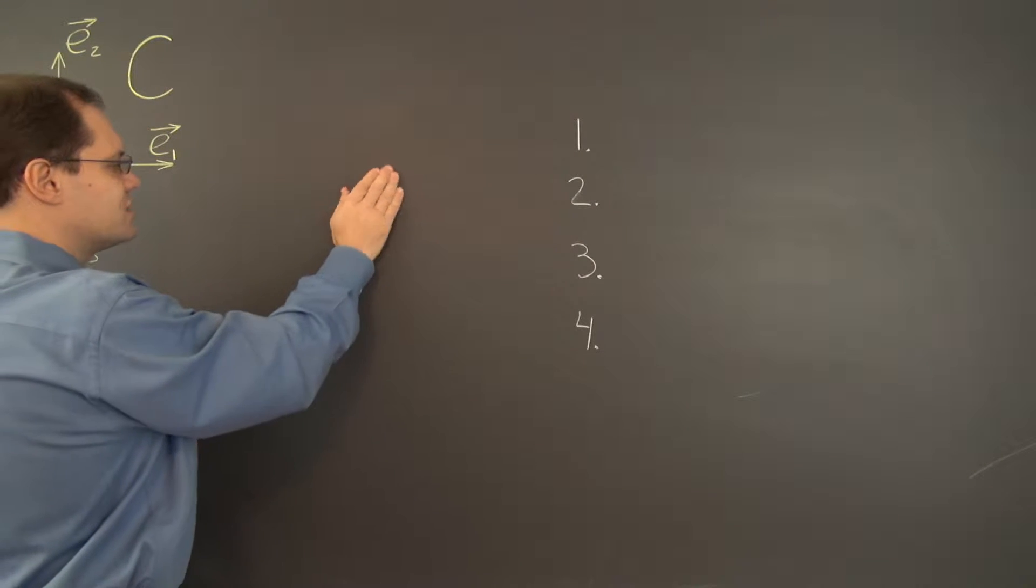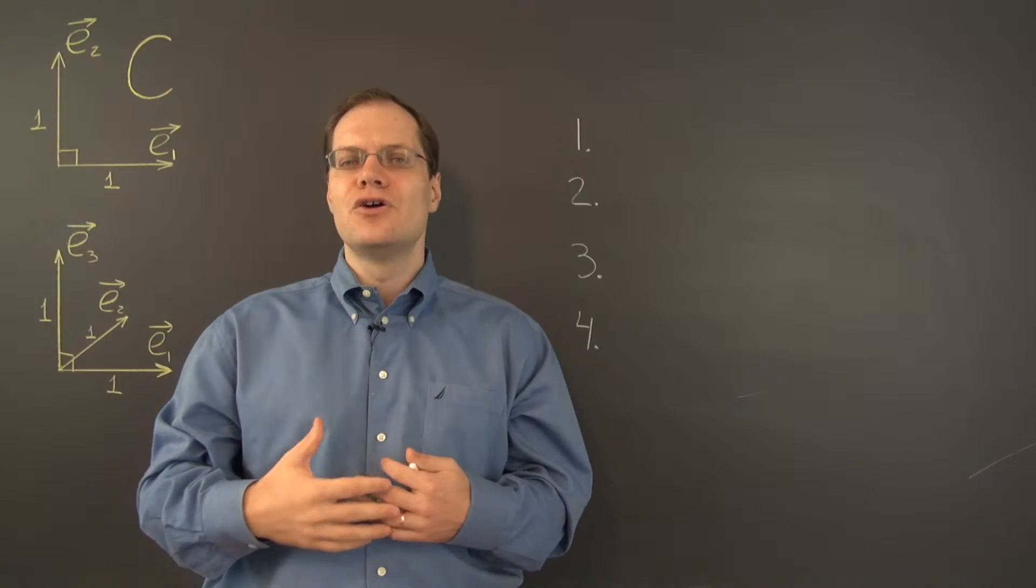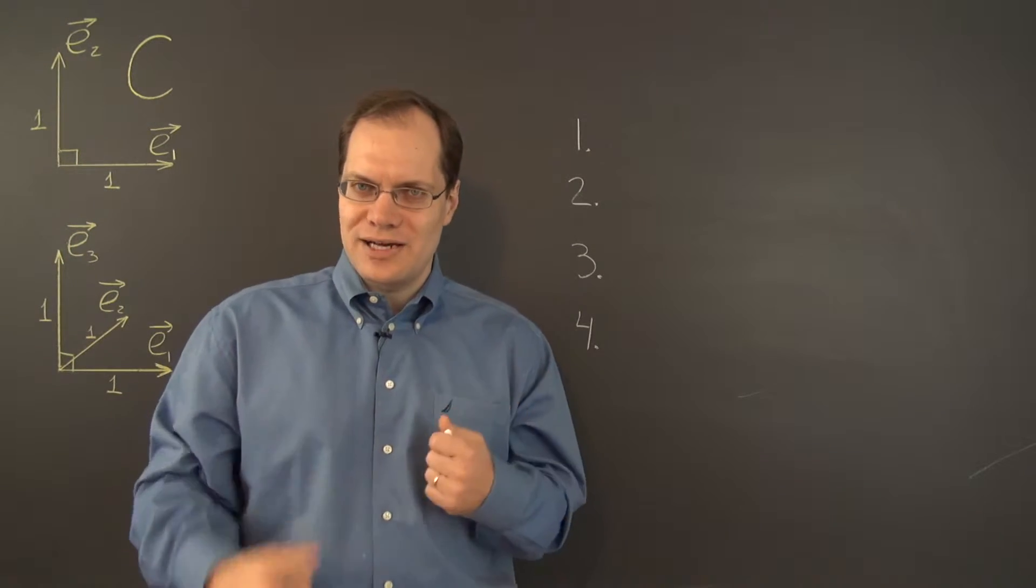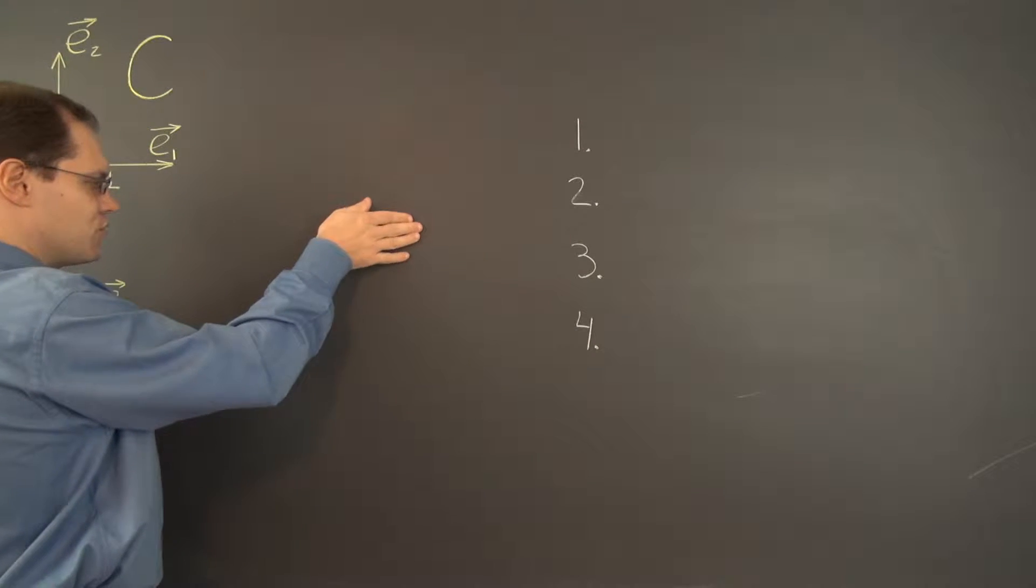So here's rotation by pi over 4. You start here, rotate by pi over 4. And of course, when the angle is negative, you're rotating in the clockwise direction. So here's rotation by negative pi over 4.